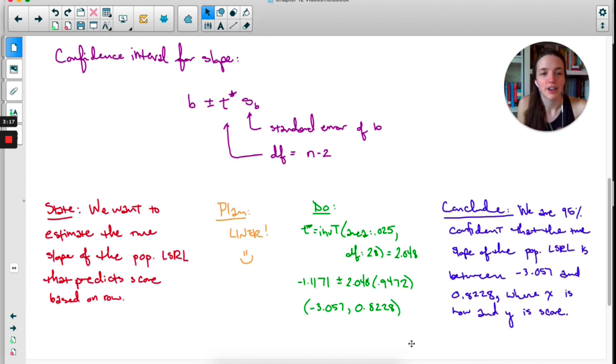For conclude, we are 95% confident that the true slope of the population least squares regression line is between negative 3.057 and 0.8228, where x is the row and y is the score. I've included context there at the end. What's interesting is that zero is actually in that interval. They didn't ask about this, but since zero is in the interval, it's possible to get zero for the slope, which would just be a straight horizontal line. So it's possible there's no relationship between the two variables.